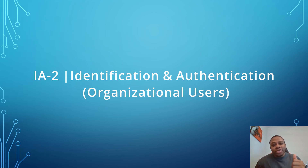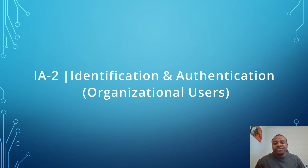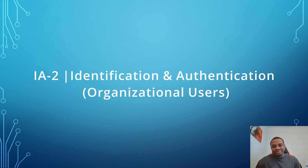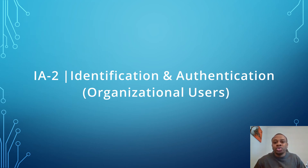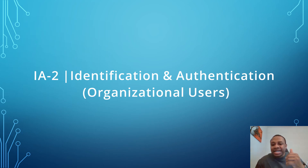What are the evidence that we can use to support the implementation of IA2 control? We can request for procedures addressing users' identification and authentication, and information system design documentation. We can also request for a sample of one user added to the system during a period of review, and the completed user access request form identifying system privileges, services requested and granted.